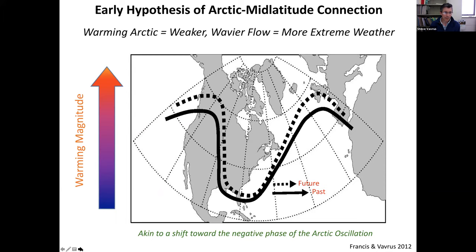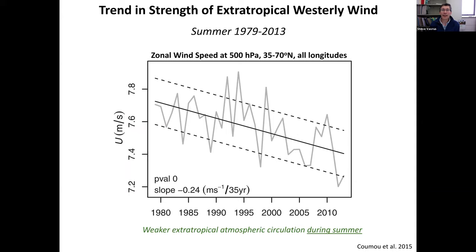Is there evidence to support that hypothesis? There is conditional evidence. In summertime, it does appear that the circulation has been weakening. A study led by Dim Coumou from 2015 looked at zonal wind speed at 500 hectopascals, about five kilometers up, and found a statistically significant decrease in westerly wind strength. But interestingly, they only found it during summer and not during winter, despite the larger warming in the Arctic during winter.